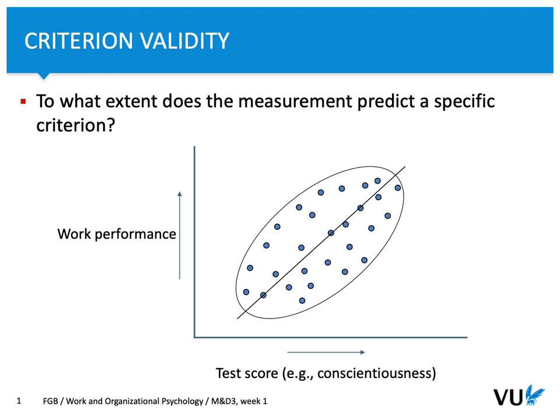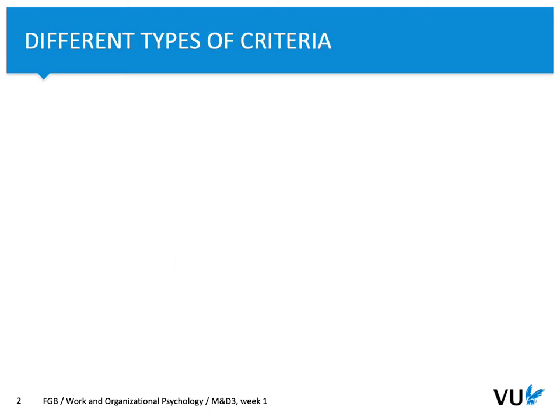We would expect that the higher the cognitive capacity, the higher the work performance. But is that always the case? Are those patterns so clear as in this example? Let's take a look at a specific theory that says that not always those patterns between predictor and criterion are so simple.